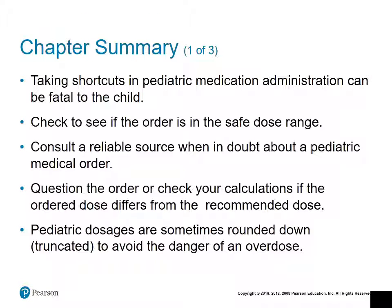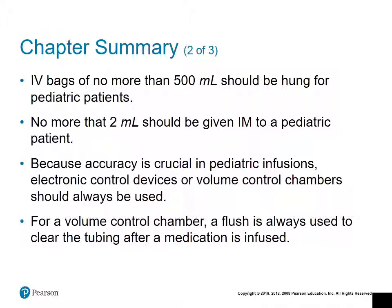To finish up, some important reminders: always be precise and careful when calculating medication for pediatric patients, and always verify that the calculated dosage is within the safe range. When working with pediatric dosages, round down rather than rounding up or rounding off, as rounding up could result in an overdose. IV bags should be 500 milliliters or less for pediatric patients, and no more than 2 milliliters should be given intramuscularly.